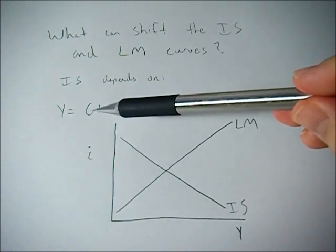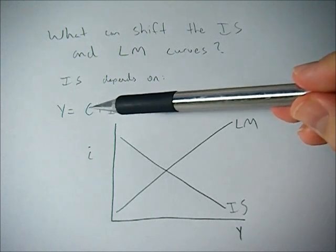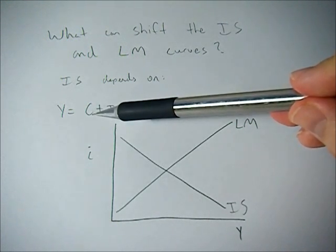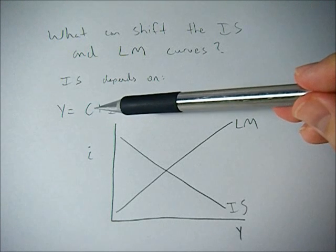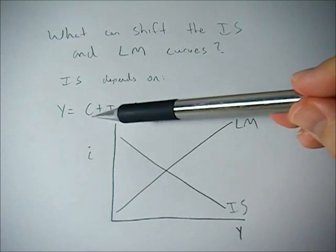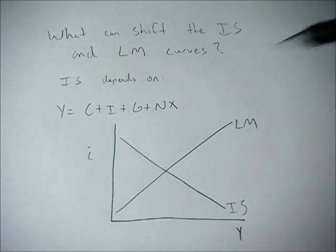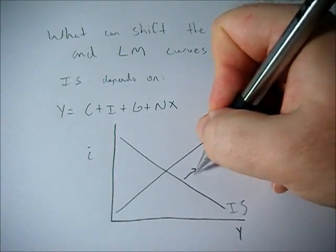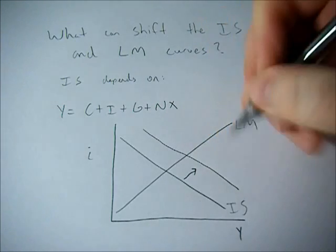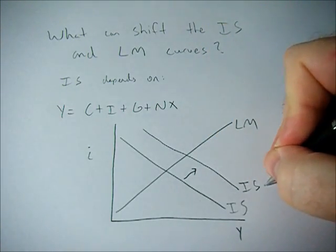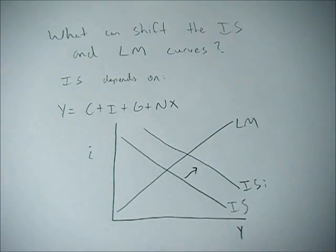We can start with consumers. Consumption spending can change if consumers decide to save more or save less, so the marginal propensity to consume changes. If consumers decide to save less, then we see an increase or a rightward shift in the IS curve.